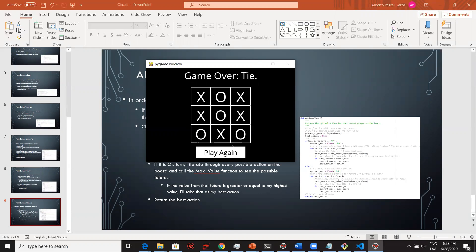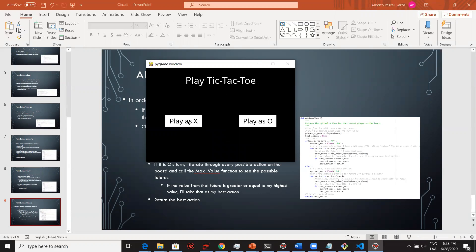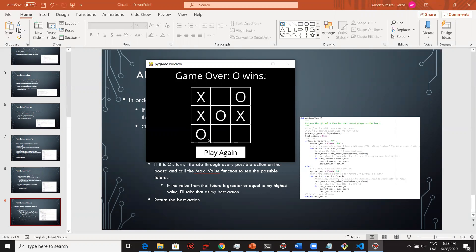And this will end in a tie over here. I can play again and then play something dumb as if I made a mistake. So let's say I go here and then I mistakenly clicked here. And there goes the AI won playing as O.